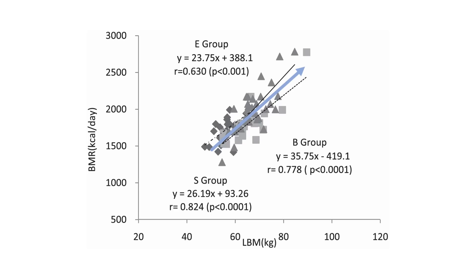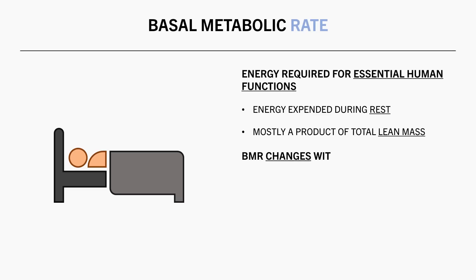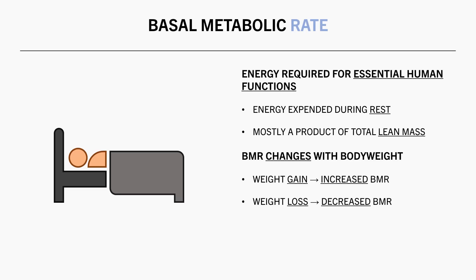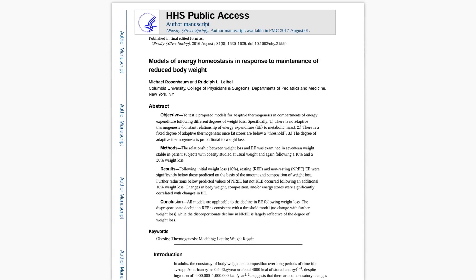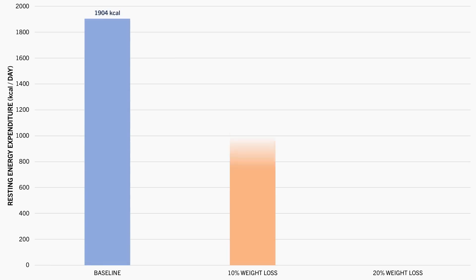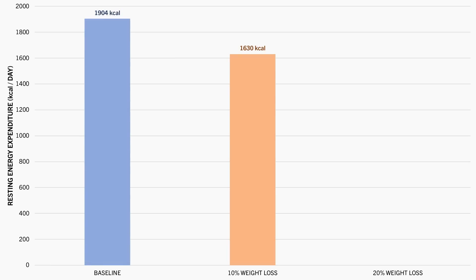Our basal metabolic rate also changes with changes in body weight. Gaining weight typically increases our basal metabolic rate, while weight loss typically reduces it. This is likely mostly due to changes in lean mass, but also possibly due to changes in fat mass too. For example, this study assessed energy expenditure in obese subjects who had lost significant body weight. It was found that after losing 10% of their initial weight, resting energy expenditure decreased by around 270 calories per day, and after losing 20% of their initial body weight, resting energy expenditure decreased by a further 100 calories or so.